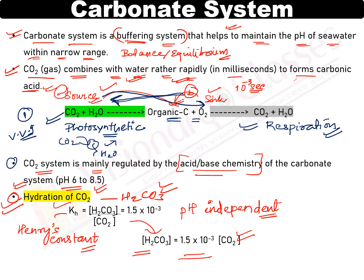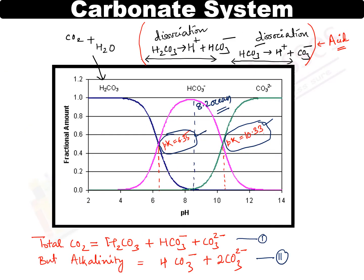This is very important from the exam point of view — this is a Unit 3 topic and it will definitely come in the exam. The most important thing we are discussing here is the carbonate chemistry equilibrium states. We are going to discuss different kinds of equilibrium states. First we will discuss bicarbonate.